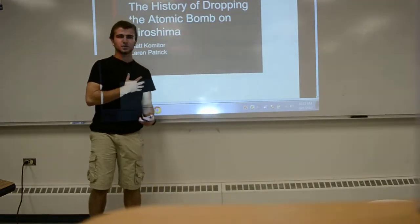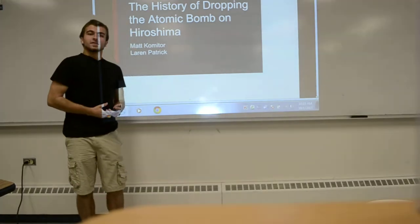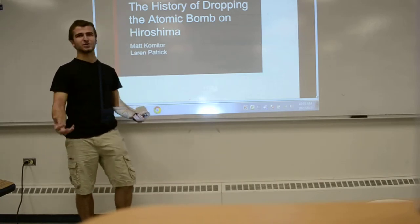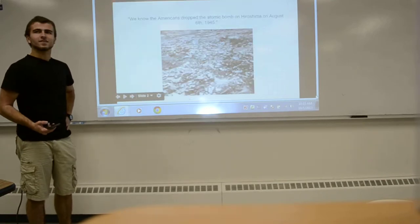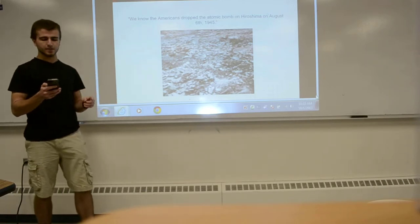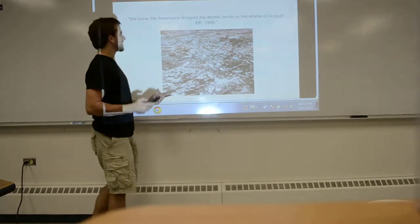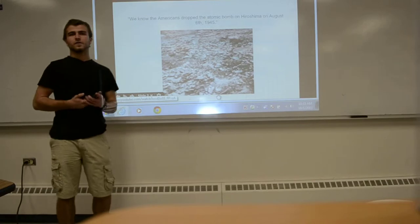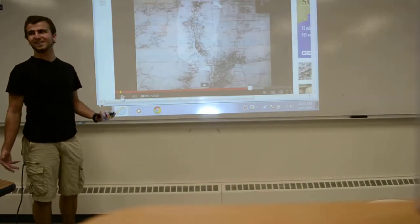Welcome all. My name is Matt Commodore, working with Lauren Patrick. He's right there. You'll see him later in the presentation. Today we're going to analyze the history of the dropping of the atomic bomb on Hiroshima. To start our presentation, we identified two knowledge claims. The first of these knowledge claims is we do know the Americans dropped the atomic bomb on Hiroshima on August 6th, 1945. We have a video to show physical proof of our knowledge claim, which is going to show the actual bombing of Hiroshima.